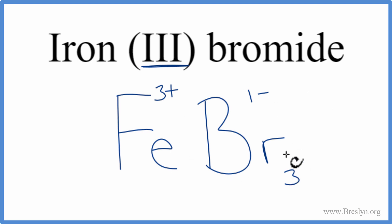We have 3 bromines here. Each one has a 1- charge. 3 times 1- is 3-. 1 iron times 3+ is 3+. So 3+ and 3- add up to 0.